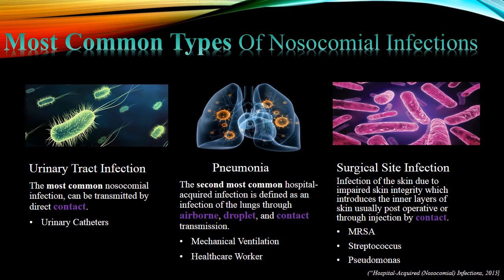These are the most common types of nosocomial infections, normally seen in an acute care setting as well as nursing homes. The first is urinary tract infection, which is the most common nosocomial infection. These are often due to direct contact of microorganisms with the urinary canal via urinary catheters, which is how most people in hospitals get urinary tract infections.